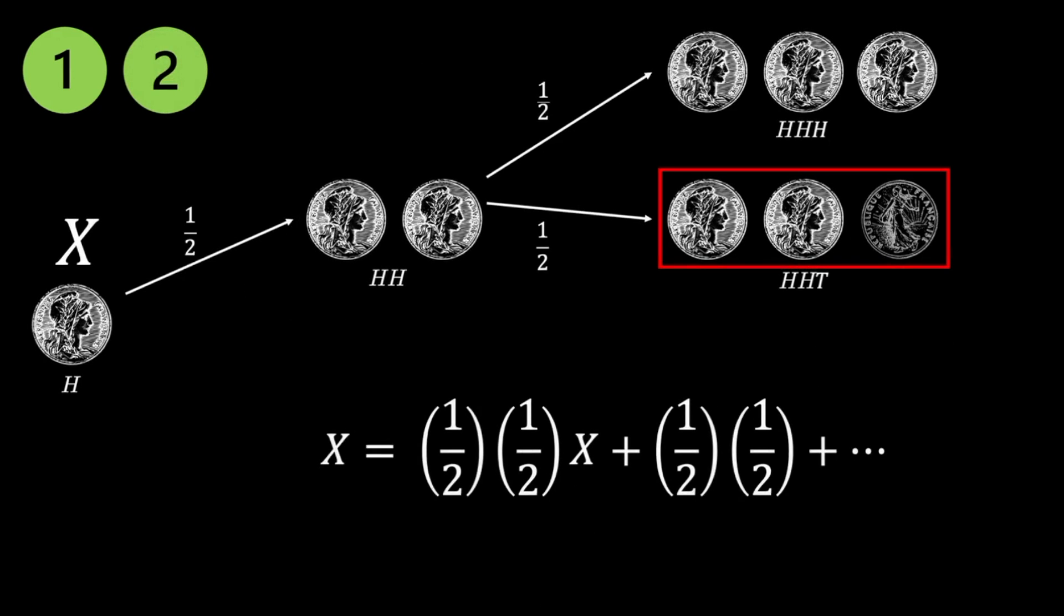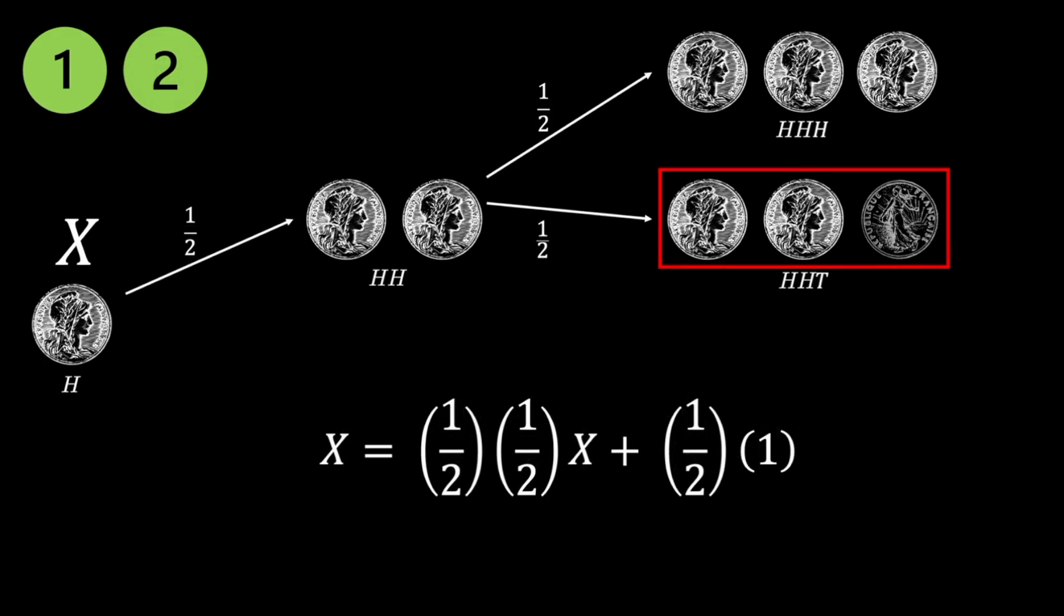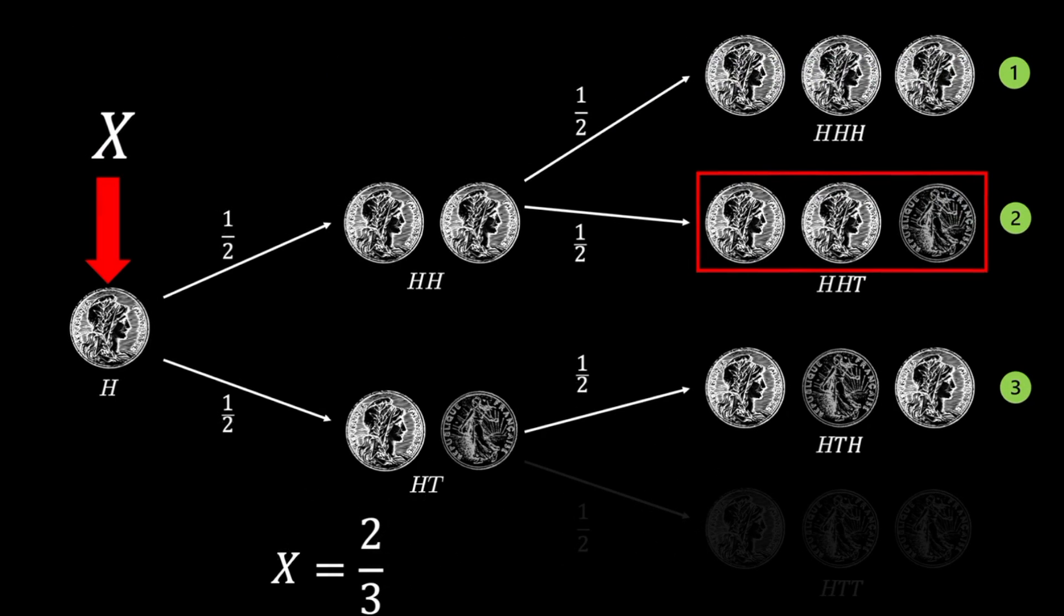We now know that getting to a sequence of two hits guarantees a win, which has a probability of 1/2 occurring. And we update our recurrence relation as follows. Solving for X gives us 2/3.